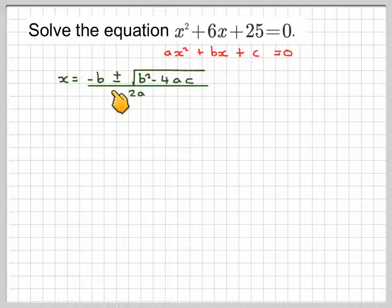then x will be equal to minus b plus or minus square root of b squared minus 4ac over 2a. This is a well-known formula.